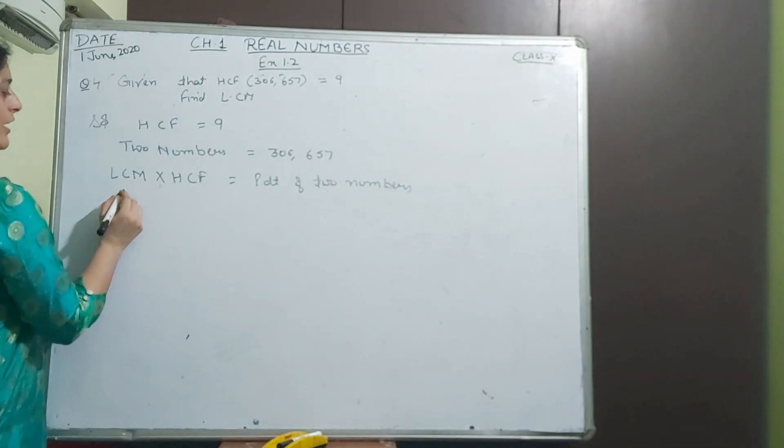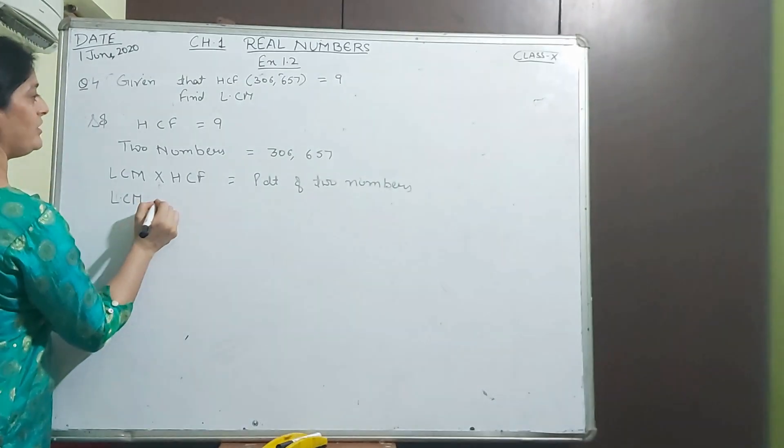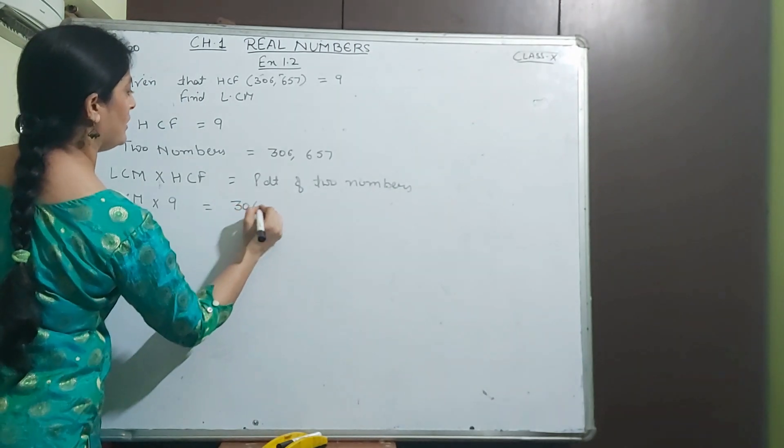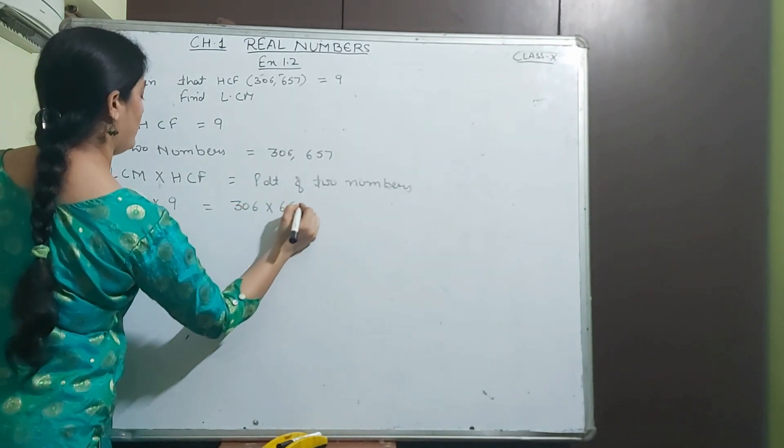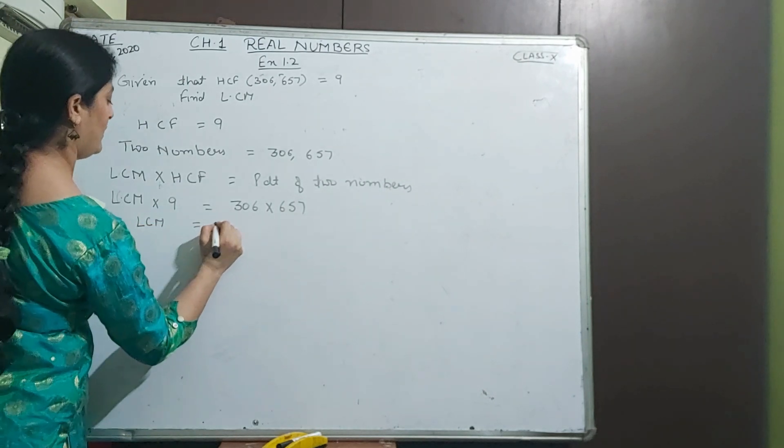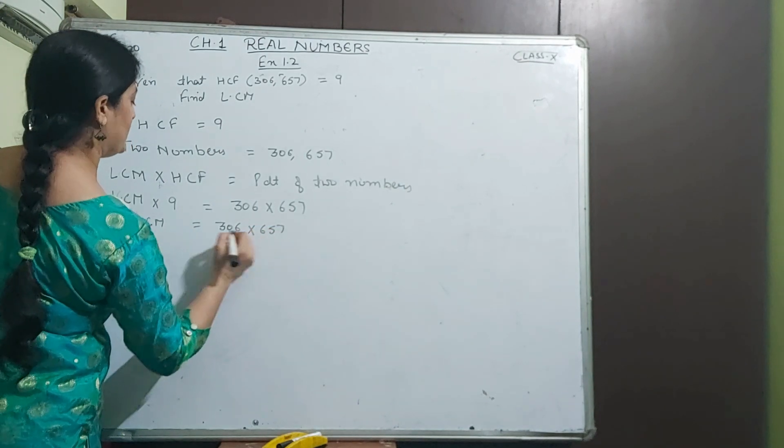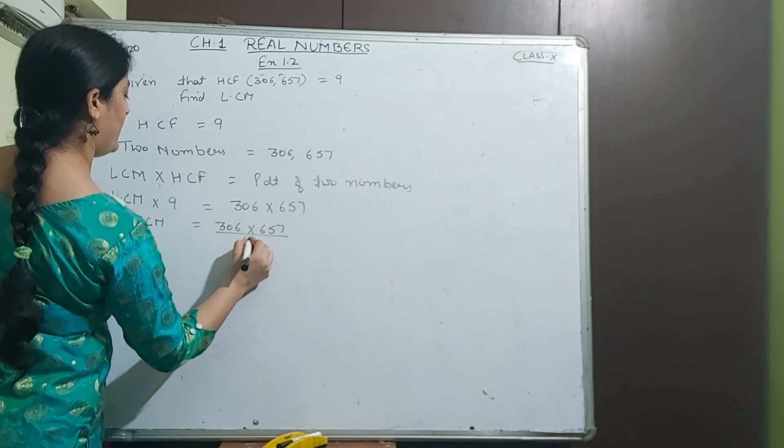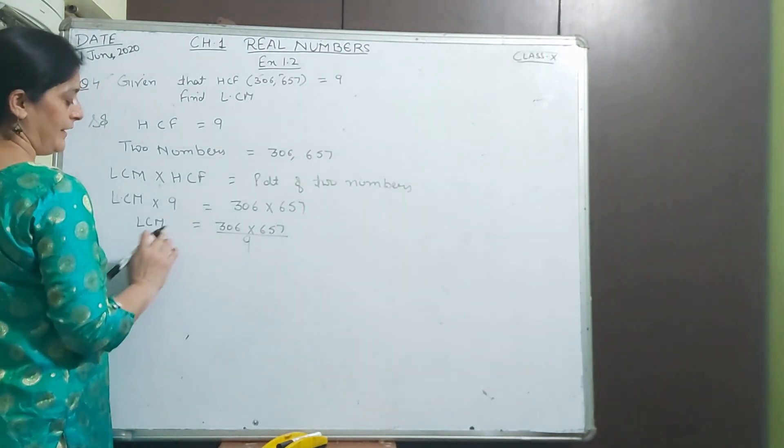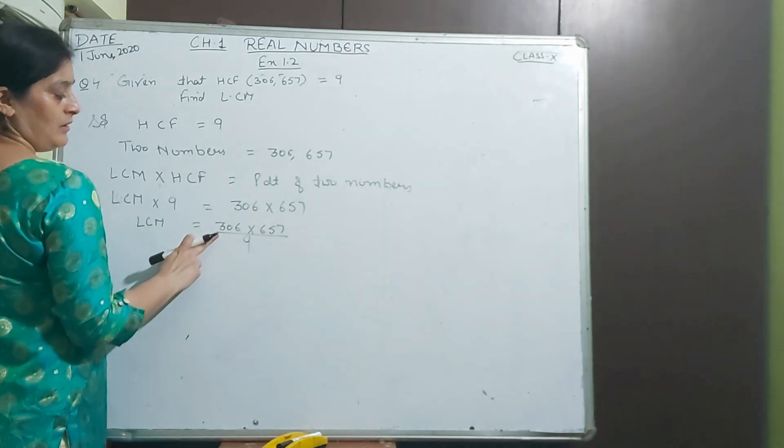We have to find LCM. HCF is 9. The two numbers are 306 into 657. So LCM equals 306 into 657 divided by 9. Now divide this number by 9 and you will get LCM.